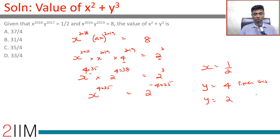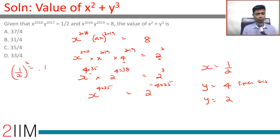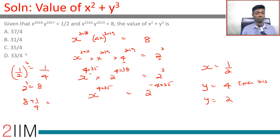So x = 1/2 and y = 4x = 2. We need x² + y³: x² = (1/2)² = 1/4, and y³ = 2³ = 8. Therefore x² + y³ = 8 + 1/4 = 32/4 + 1/4 = 33/4.